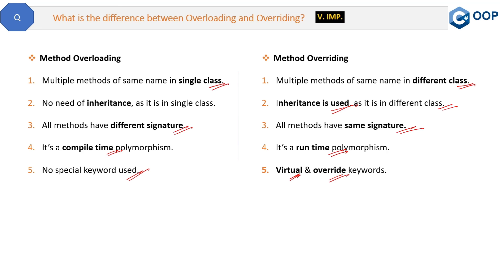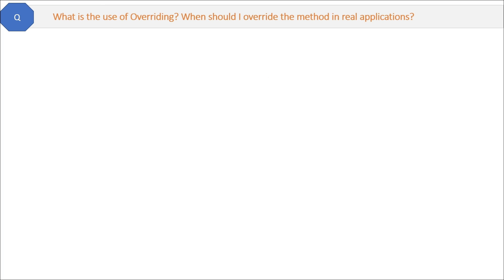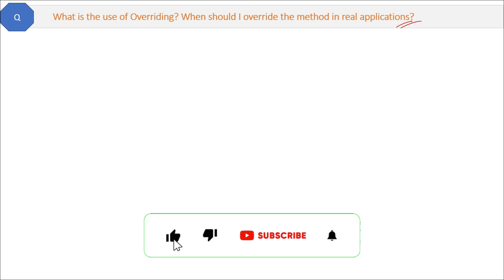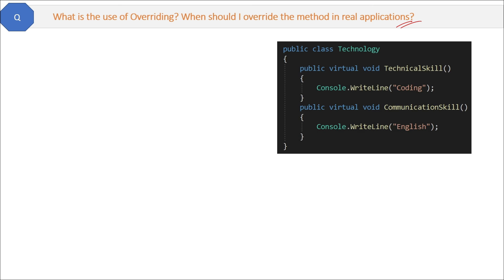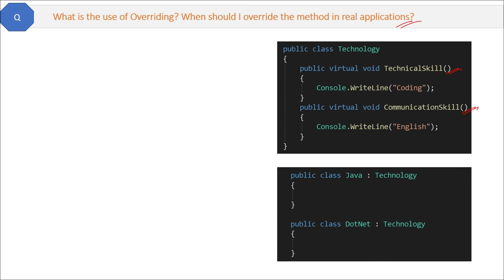Now here is a practical question: what is the use of overriding? When should you override a method in real applications — in other words, why override the base method in a derived class instead of creating a new method? Suppose we have a project with a technology base class. Here we have two virtual methods: technical skill and communication skill. Then you derive this class in other classes like Java and .NET. Whenever you create the object of Java or .NET, the object will automatically get the base class methods.